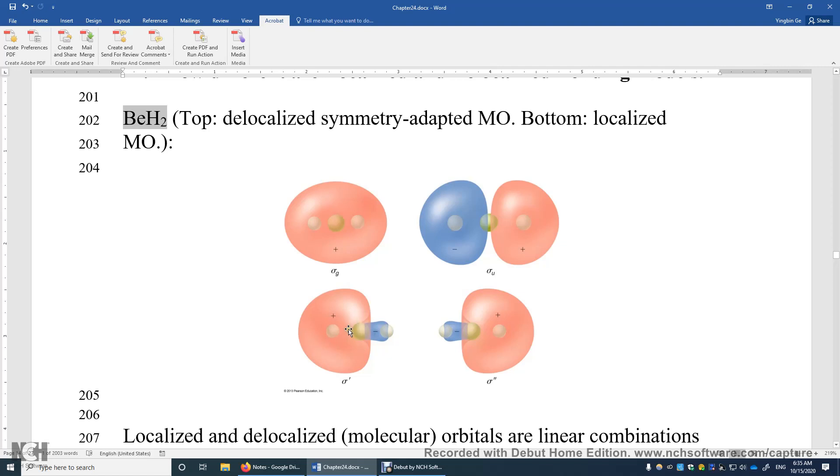And then Beryllium uses these two hybrid orbitals to form two bonds, two localized bonds with the two hydrogen atoms. So over here, you can see this is one of the sp-hybrid orbitals on Beryllium.